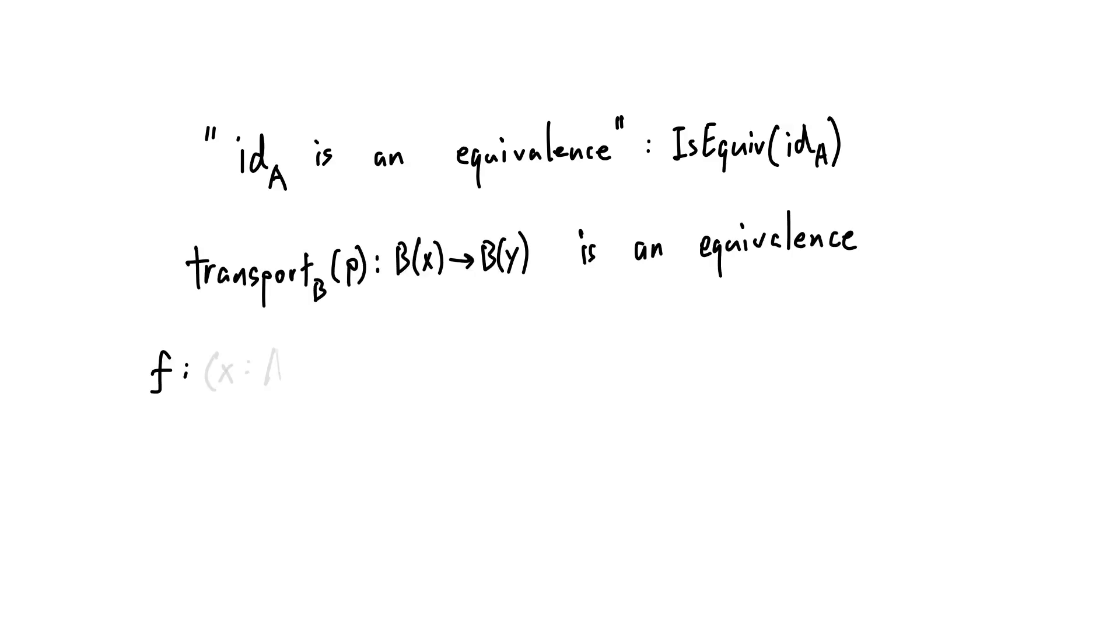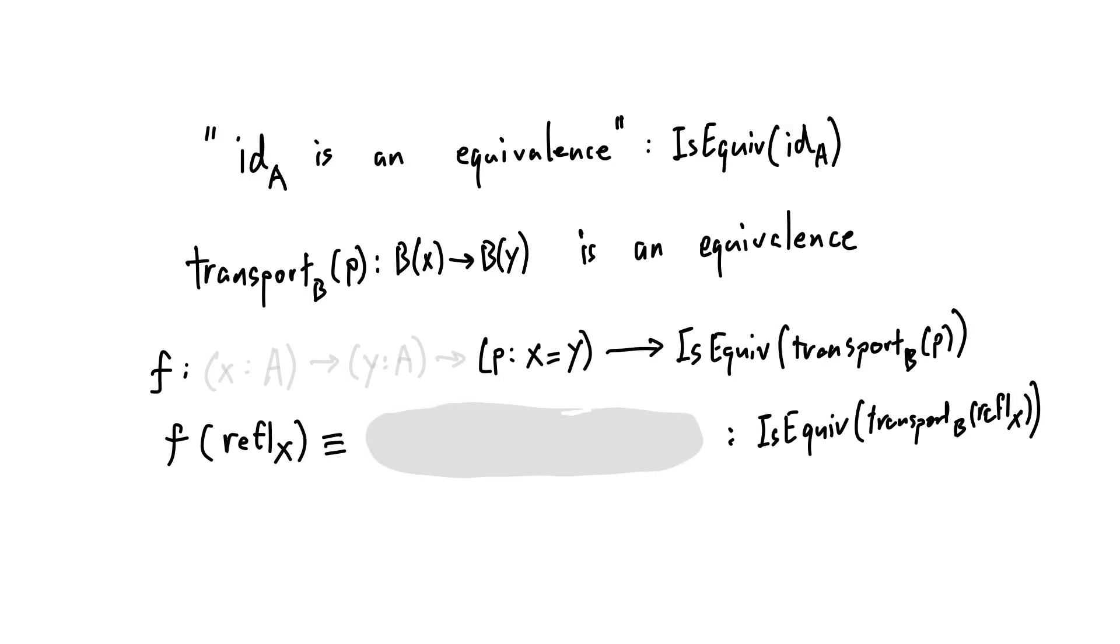It is easy to prove that for every type A, the identity function is equivalent, and the transport function along arbitrary path is also an equivalence. Why? Because if the path is refl, transport is the identity function. And we have shown that identity functions are equivalences. And that's it. This is applying our friend induction.